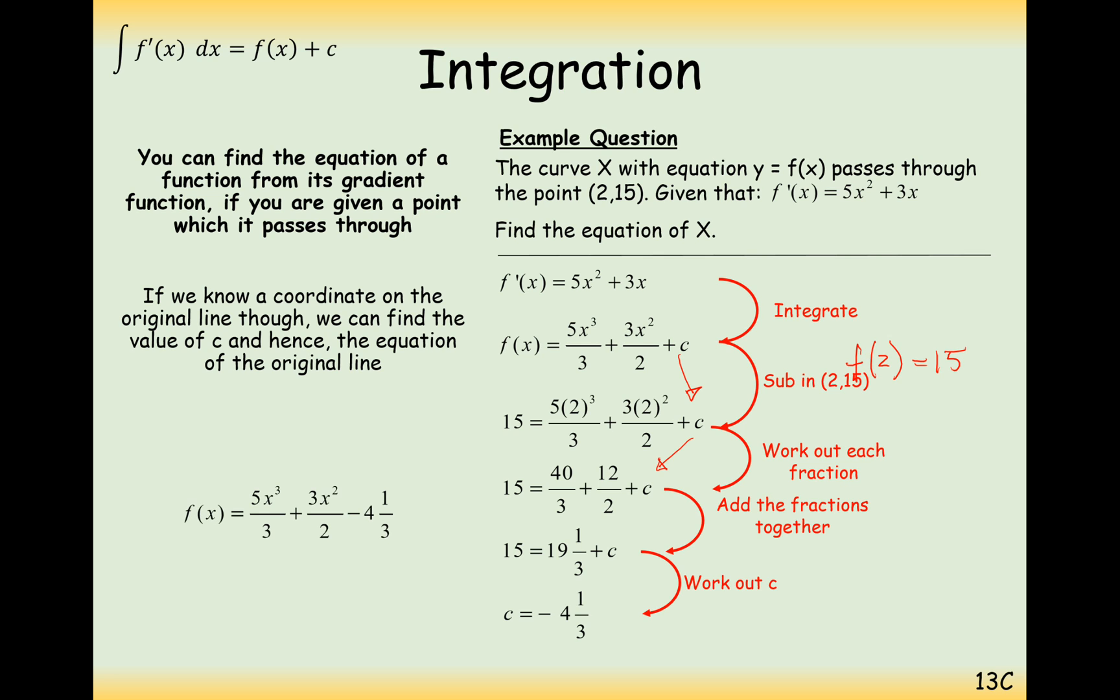So here we can now work out the original function before we differentiated which was 5x cubed over 3 plus 3x squared over 2 minus 4 and a third. So a bit of a two-step process here. We integrated first and then we substituted in our coordinate to work out what c was.